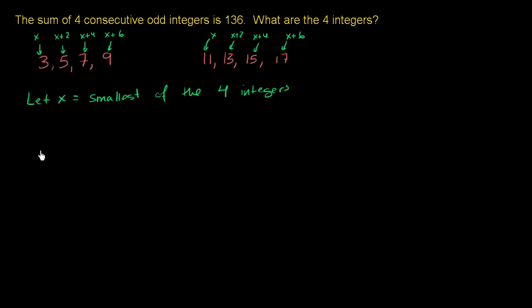And so let's take the sum of them and set that equal to 136, and then solve for x. So the smallest one is x, the next smallest one is x plus 2, the next one after that is x plus 4, and then the one after that is x plus 6. So this is the sum of the four consecutive odd integers, and they tell us that is going to be equal to 136.